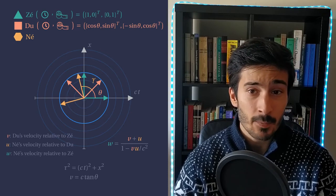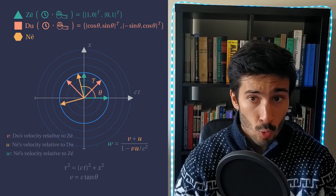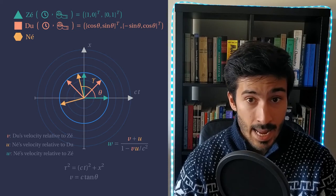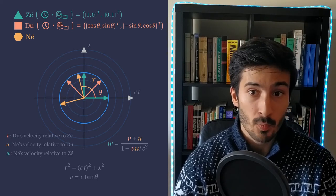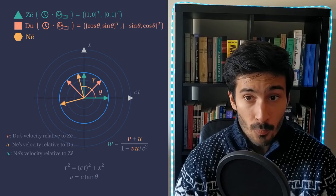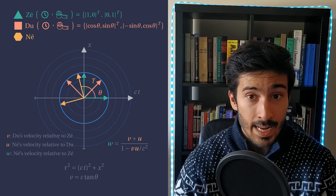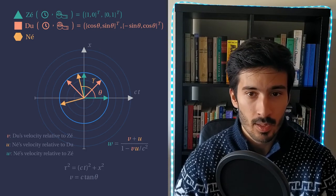Physically, this means that if Ze is standing, Du is moving relative to Ze and Ne relative to Du, at reasonable velocities for both Du and Ne, from Ze's point of view, Ne can be traveling backwards in time. This is not good.